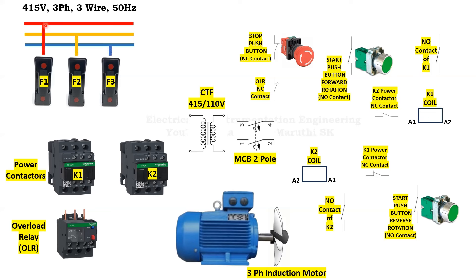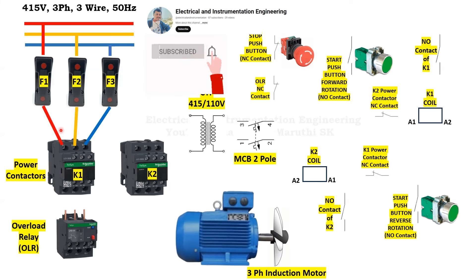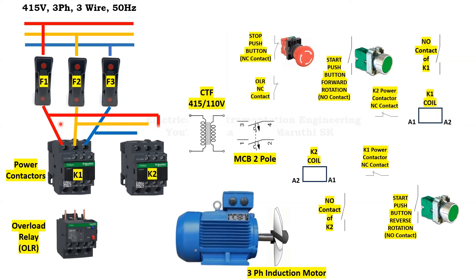Now we have extended R phase, Y phase, and B phase up to the fuse incoming terminals. From fuse outgoing terminals, we have extended R phase, Y phase, B phase up to the K1 power contactor's incoming terminals. We have taken a tapping from K1 power contactor incoming terminals up to the K2 power contactor incoming terminals. Observe here — R phase and B phase have been reversed, so the motor rotation direction will be changed when K2 power contactor actuates.